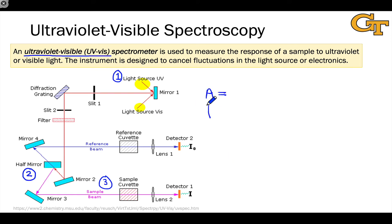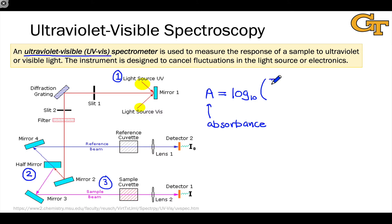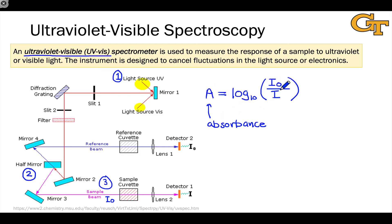What we call the absorbance, A, is a measurement of the amount of light absorbed by the sample. For colored samples, the extent of light absorbed can be quite large, so absorbance uses a log value to account for this. It's the log of the incident intensity I0 divided by the intensity of light transmitted, measured by detector one. Placing I0 in the numerator ensures that absorbance is a positive value when light is absorbed, since I0 over I will be greater than one when light is absorbed.